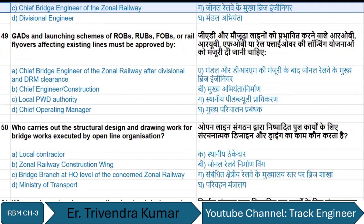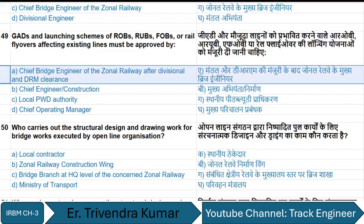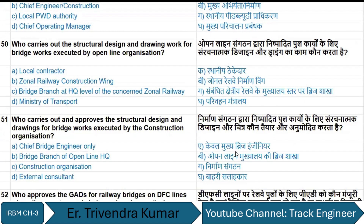GAD and launching schemes for ROBs, RUBs, FOBs, or rail flyovers affecting existing lines must be approved by the Chief Bridge Engineer of the zonal railway after divisional and DRM clearances. Structural design and drawing work for bridge works executed by open line organizations is carried out by the bridge branch of the concerned zonal railway.